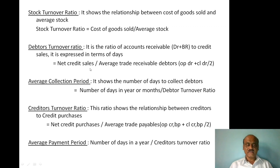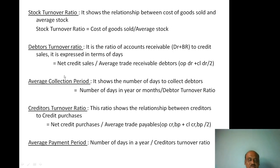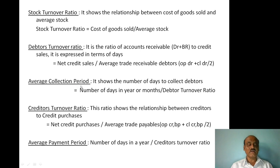Average Trade Receivables is calculated as opening trade receivables plus closing trade receivables divided by 2. The Debt Collection Period shows the number of days to collect from debtors, and is calculated as: Number of Days in the Year divided by Debt Turnover Ratio.